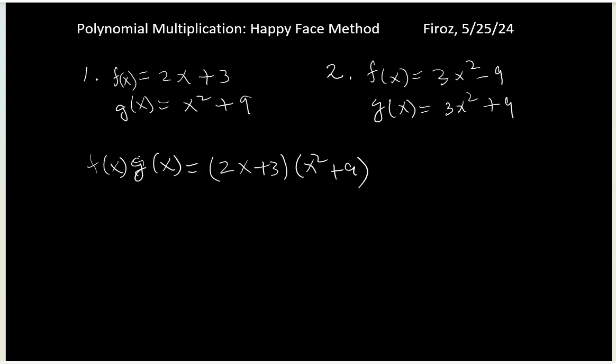The happy face method is like this: multiply these two, then these two, then multiply here like the happy face, and then multiply here. So what happens? We use 2x times x², which gives us 2x³.